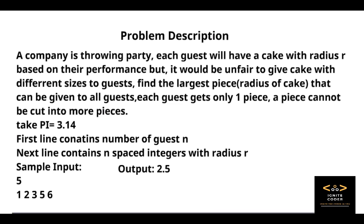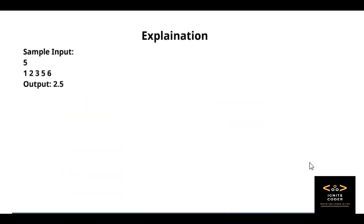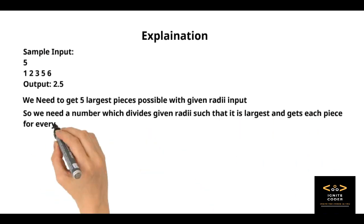So how is this output 2.5? Before solving, you should understand the problem, like what he is asking. He's asking for the largest piece that can be cut from each and every cake which can be given to all five guests.